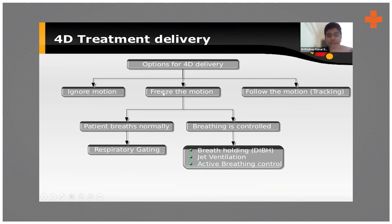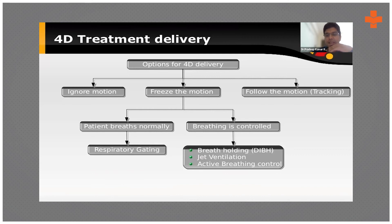In freezing motion, patients can breathe normally and using respiratory gating technique, we deliver treatment at a particular phase of inspiration or expiration. With breathing control, the patient is asked to hold their breath at a specific point — either inspiration or expiration — the beam is delivered, and then the patient releases the breath.